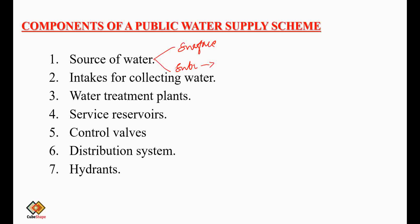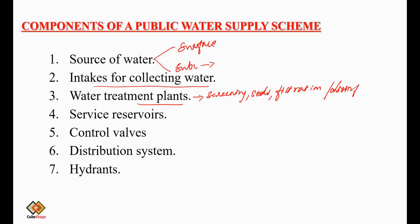The second component is the intake, for collecting the water supply — whether from a nearby vicinity or from rural places. The third component is the water treatment plant, which includes different processes such as screening, sedimentation, coagulation, filtration, and finally disinfection. Any water must be disinfected before it is supplied to consumers. For surface water, treatment methods are followed and it is disinfected before supply; if the quality of groundwater already meets requirements, it can be disinfected and directly supplied.